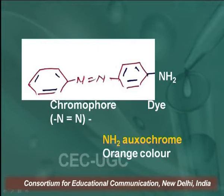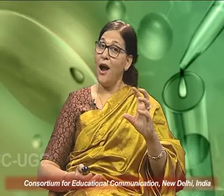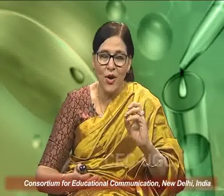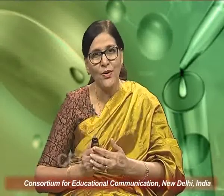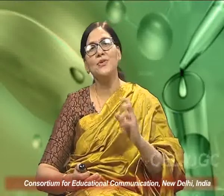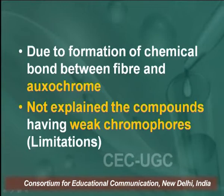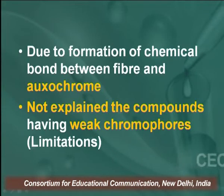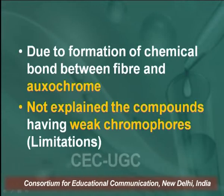Now, how does the chromophore work? A chromophore can form a salt either with basic or acidic solution. As I told you, oxochromes contain a lone pair of electrons. The presence of oxochrome converts a coloured compound into a dye which fixes permanently to the fibres. Due to the formation of a chemical bond between fibre and oxochrome, we get a deep colour. The oxochrome's non-bonding electrons are shared with the chromophore, extending its conjugation.